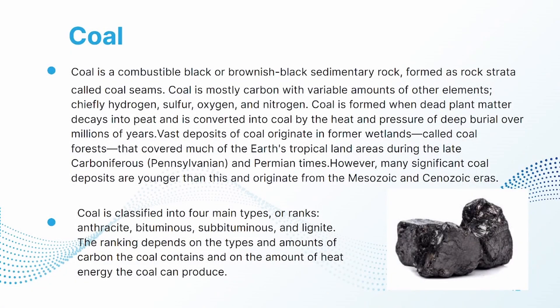The last non-clastic sedimentary rock we are going to discuss today is coal. Coal is a combustible black or brownish-black sedimentary rock, formed as rock strata called coal seams. Coal is mostly carbon with variable amounts of other elements, chiefly hydrogen, sulfur, oxygen, and nitrogen. Coal is formed when dead plant matter decays into peat and is converted into coal by the heat and pressure of deep burial over millions of years.